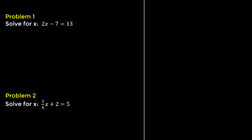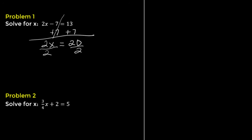Problem 1. Solve for x: 2 times x minus 7 equals 13. Add 7 to both sides. Positive 7 and negative 7 cancel, giving 2x equals 20. Divide both sides by 2. The solution is x equals 10.